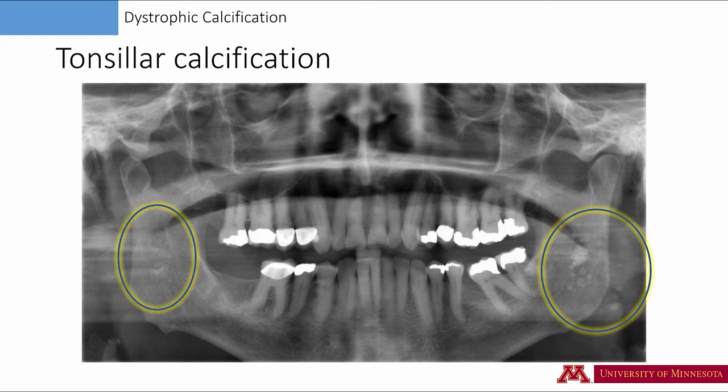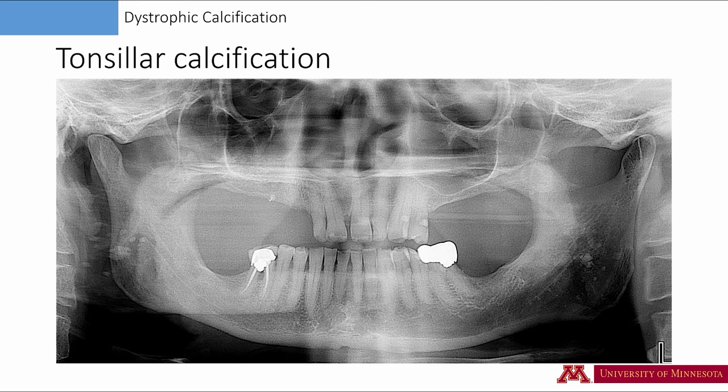As you can see, some of the calcifications are larger than the others. On this radiograph, again we see bilateral tonsillar calcifications. This time the calcifications are larger on the right side. The patient is partially edentulous, about 65 years old. I am not putting a circle over the radiopacities, expecting that you have already identified these tonsillar calcifications.